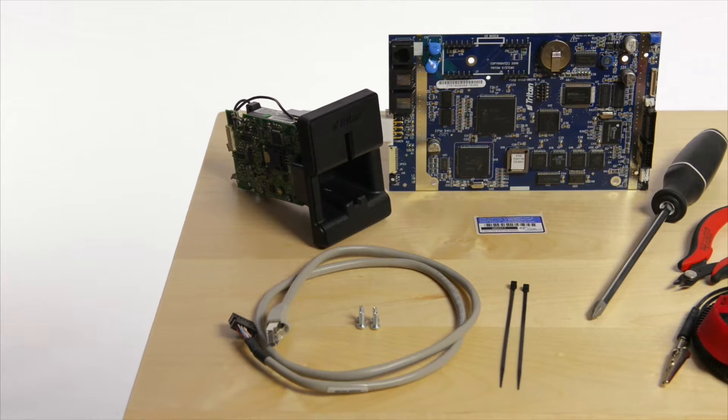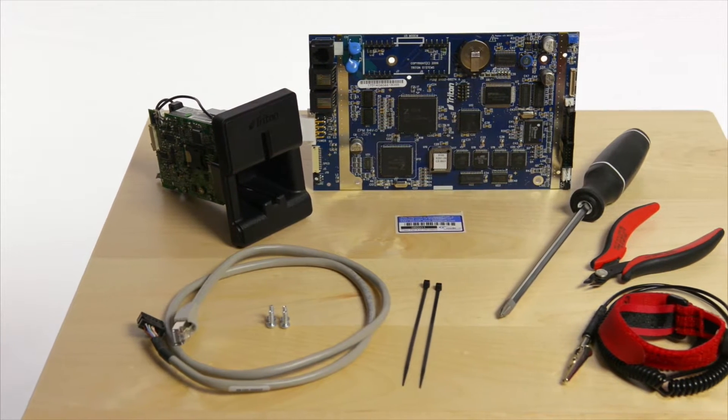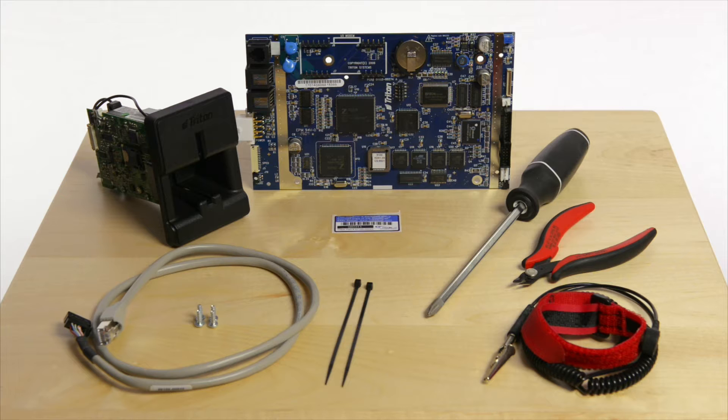Your 9100 EMV upgrade kit with a program mainboard includes one program mainboard, a Sankyo ICM 330 card reader, one card reader cable, four screws, two tie wraps, and a credit call license.